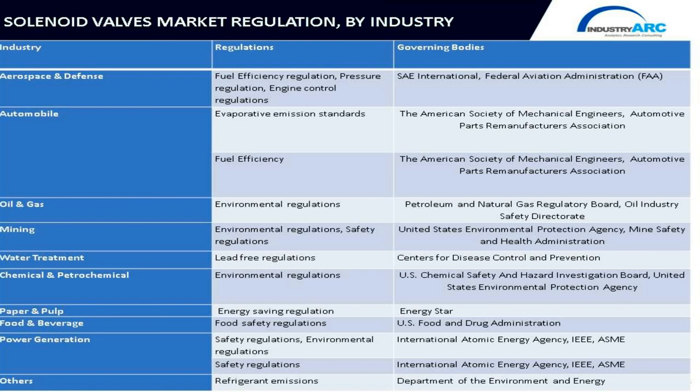For automobile, the regulations comprise evaporative emission standards and fuel efficiency regulations, governed by the American Society of Mechanical Engineers (ASME) and the Automotive Parts Remanufacturers Association. For oil and gas, the regulatory framework includes environmental regulations governed by the Petroleum and Natural Gas Regulatory Board and the Oil Industry Safety Directorate.